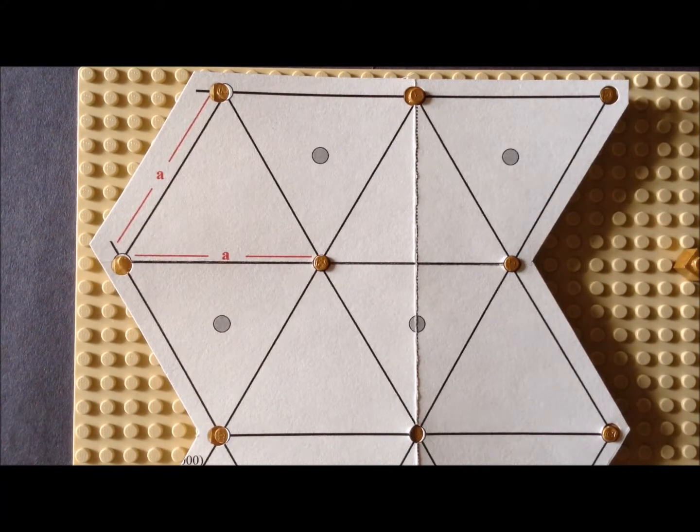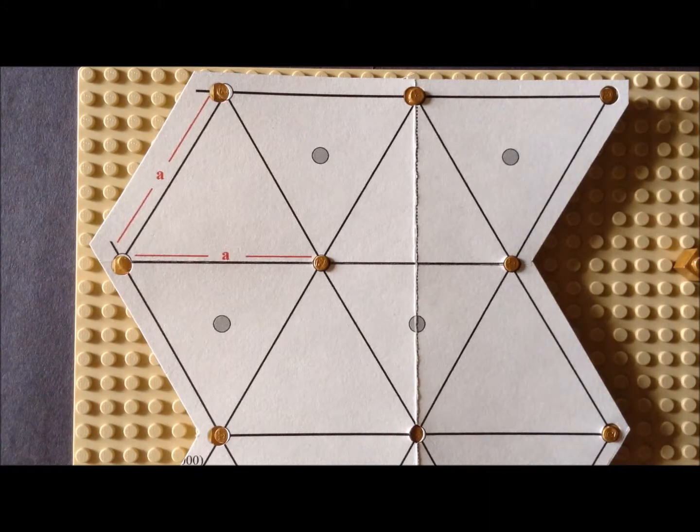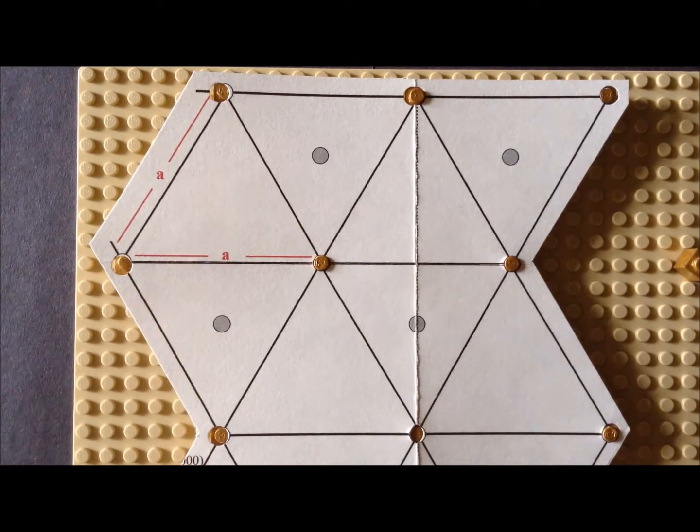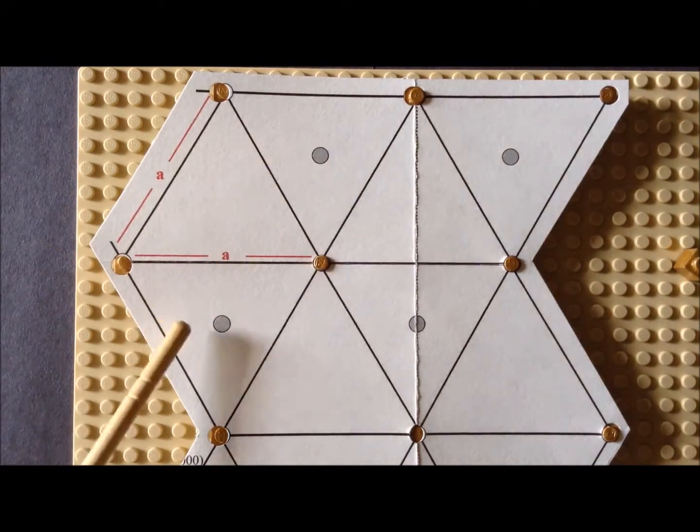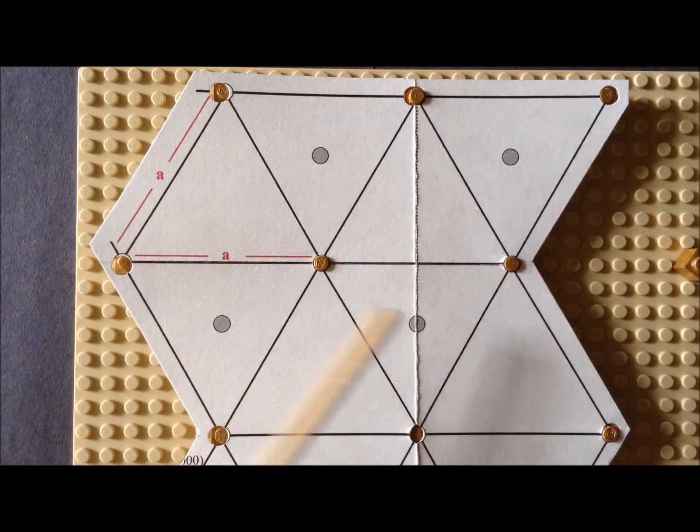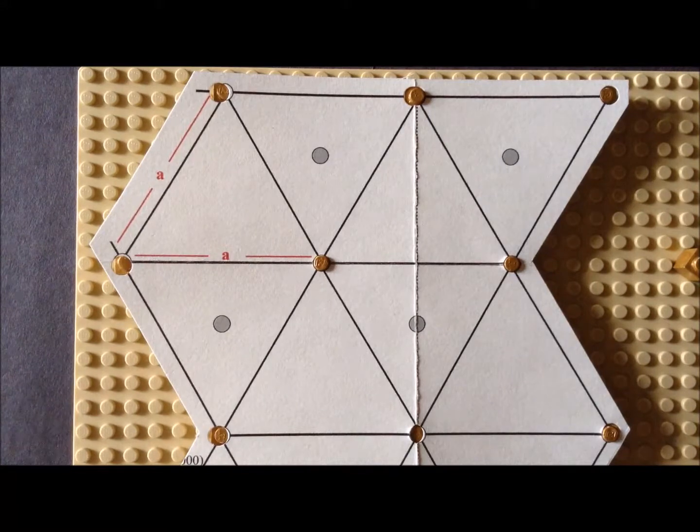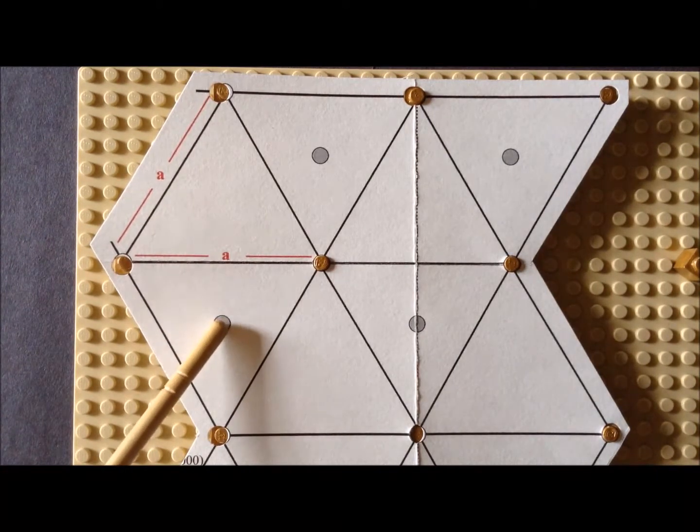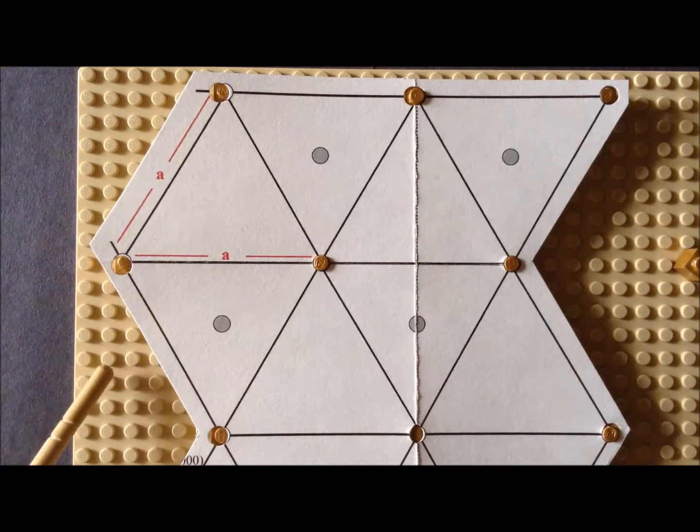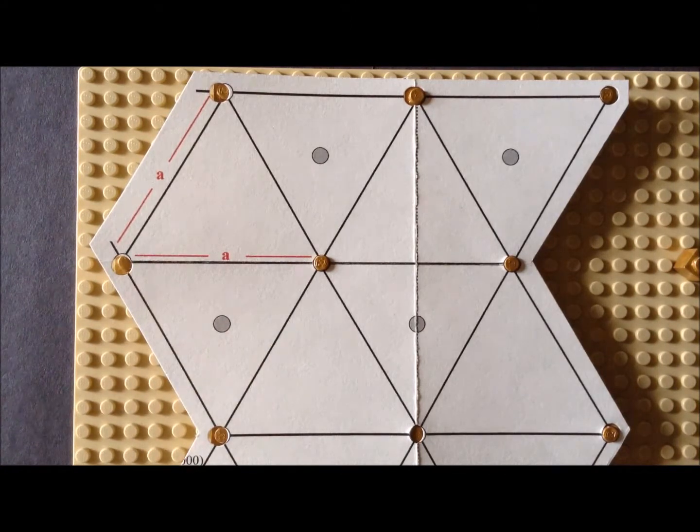While it would be possible to more thoroughly model the HCP surface, one of the difficulties we have in trying to model this particular atom is that we know it's a distance of c over 2 below the surface, but the bigger problem is that the exact location at this point doesn't correspond to one of the studs in Lego.